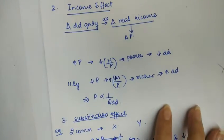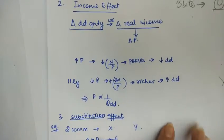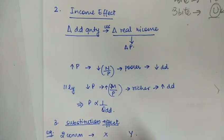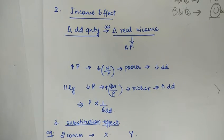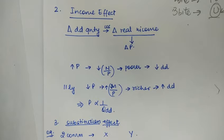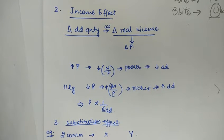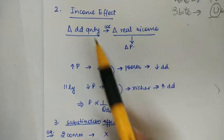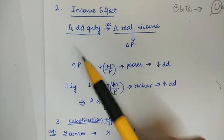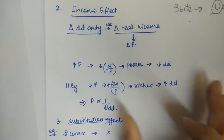The law of diminishing marginal utility will be explained in detail when covering consumer equilibrium. This was just to explain the downward slope of the demand curve. Now let's move on to the income effect.